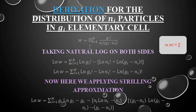Taking natural log on both sides: ln(W) equals the summation of ln(gᵢ!) minus ln(nᵢ!) minus ln(gᵢ - nᵢ!). Because gᵢ! is in the numerator we get a positive term, and the denominator terms carry negative signs. So ln(W) = Σ [ln(gᵢ!) - ln(nᵢ!) - ln(gᵢ - nᵢ)!].